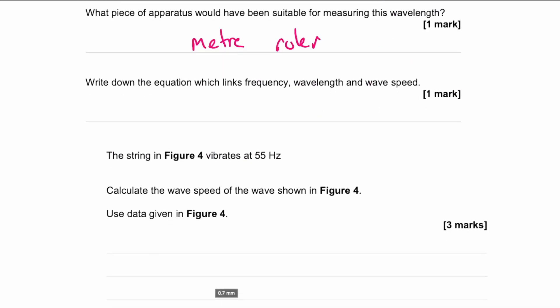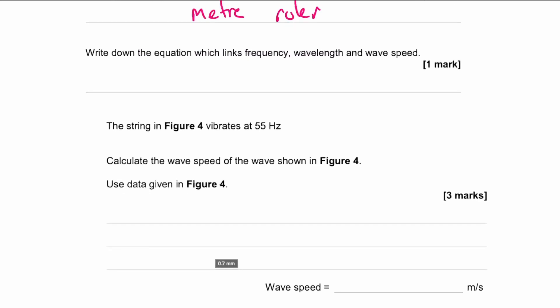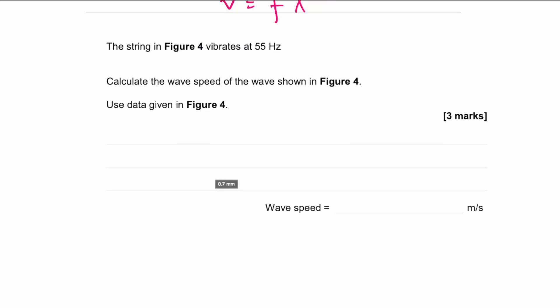The next part asks you to write down the equation linking frequency, wavelength, and wave speed. You can take it straight from the equation sheet: v equals f lambda. Or, more safely since we haven't defined the symbols, write it as wave speed equals frequency multiplied by wavelength.